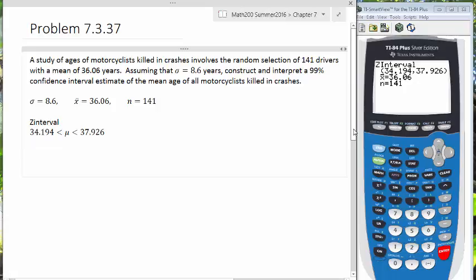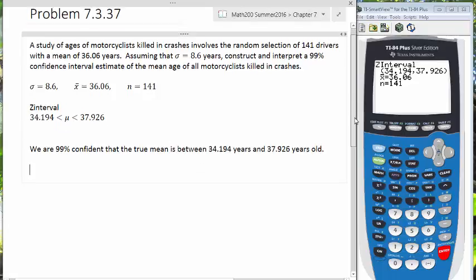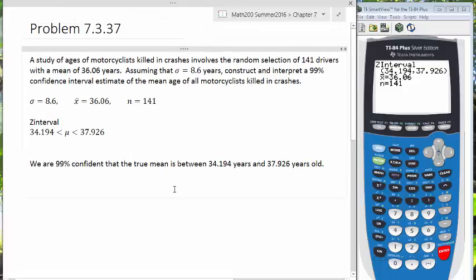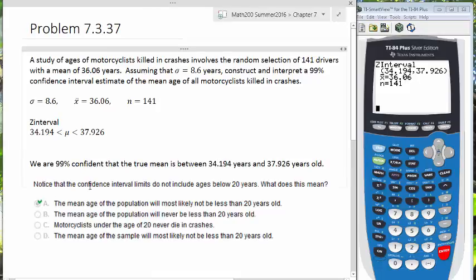Now we can interpret this by saying that we are 99% confident that the true mean is between 34.194 and 37.926 years old. That's our interpretation, so we're basically done with this problem. The homework assignment had a follow-up question. Let's take a look at that. Notice that the confidence interval limits do not include ages below 20 years. What does that mean?